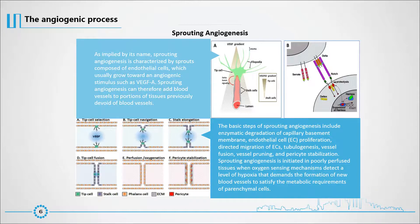The basic steps of sprouting angiogenesis include enzymatic degradation of capillary basement membrane, endothelial cell (EC) proliferation, directed migration of ECs, tubulogenesis, vessel fusion, vessel pruning, and pericyte stabilization. Sprouting angiogenesis is initiated in poorly perfused tissues when oxygen-sensing mechanisms detect a level of hypoxia that demands the formation of new blood vessels to satisfy the metabolic requirements of parenchymal cells.